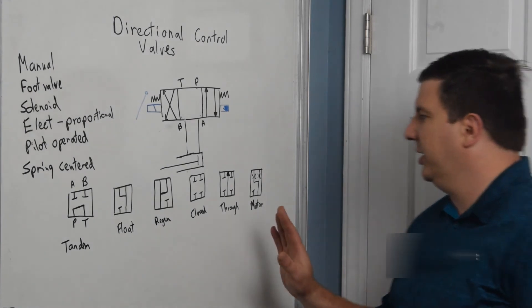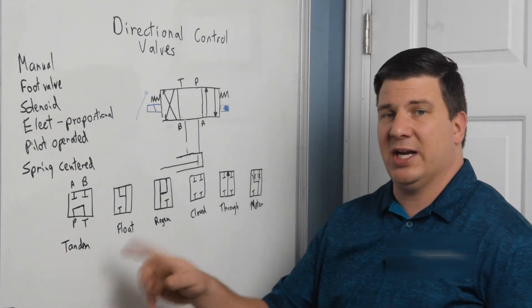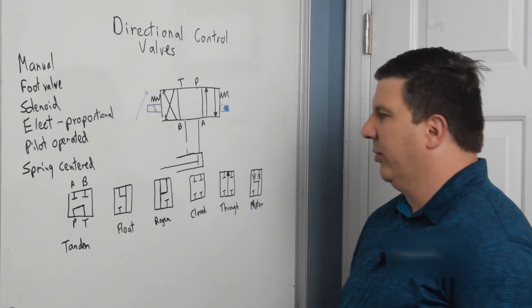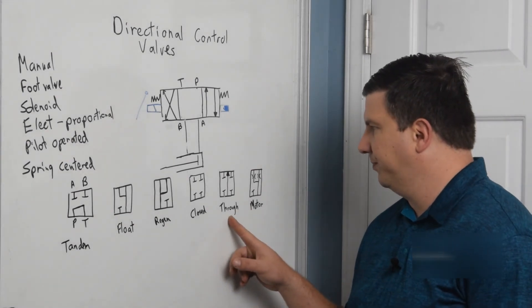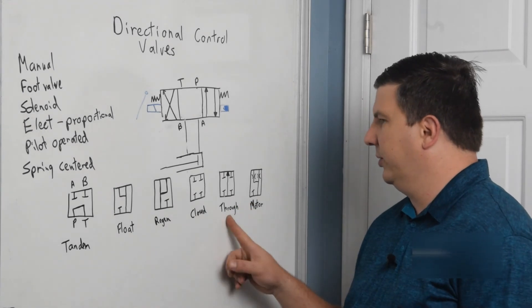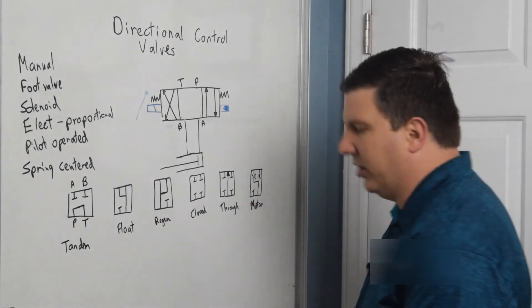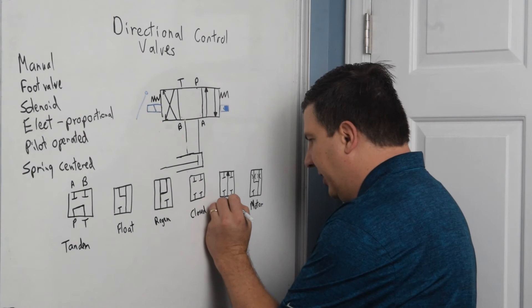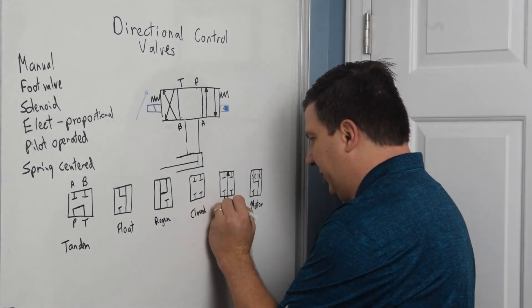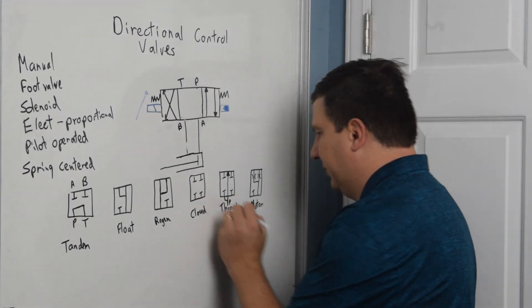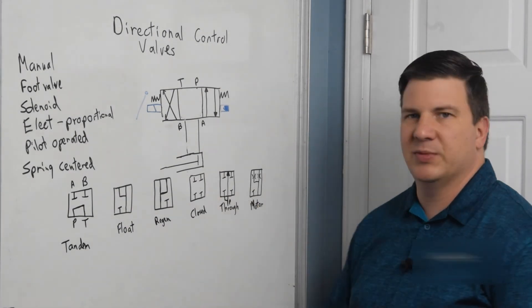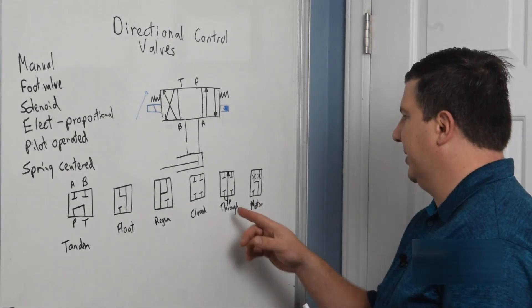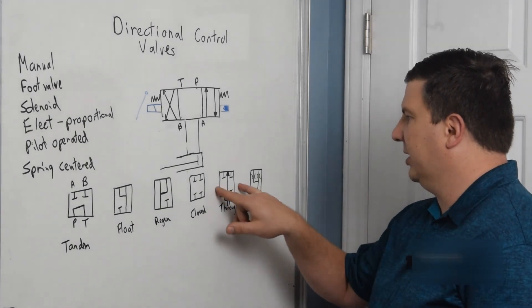So the last one, as I mentioned before that with the tandem one, you don't want to stack a whole bunch of these together. What you want to do is get a whole bunch of ones that have a through section. And what it allows it to do is, I'll actually draw a little bit more of the schematic, is both of these would be tied to your pressure. Sometimes there's a check valve in there, very small one.